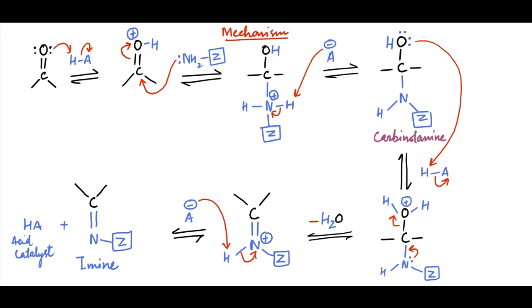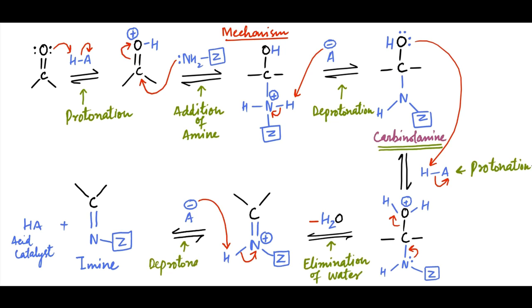This mechanism can be divided into two parts. 1. The first three steps, protonation, addition and deprotonation, produce an intermediate called carbinolamine and 2. The last three steps, protonation, elimination and deprotonation, convert the carbinolamine into an imine. The first letters of these steps, that is, P-A-D-P-E-D, makes a mnemonic PAD-PED to help remembering these steps.